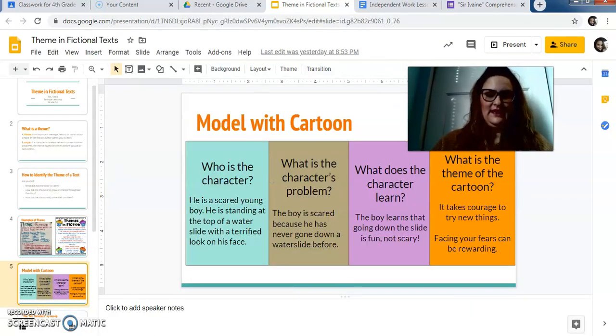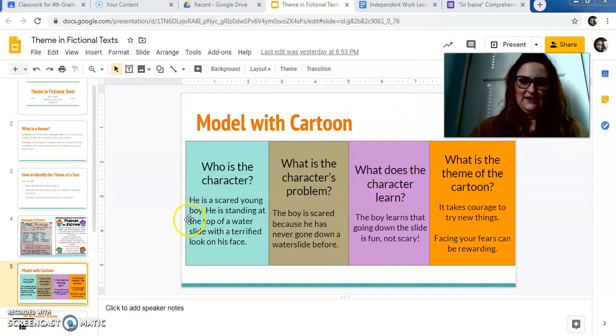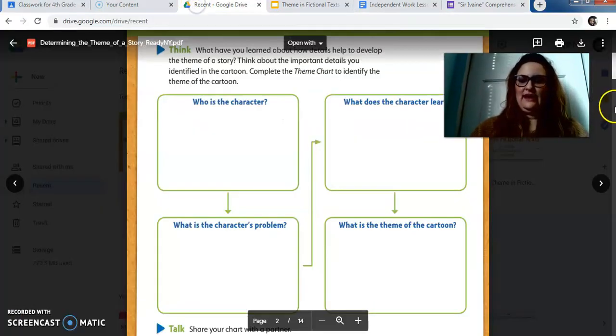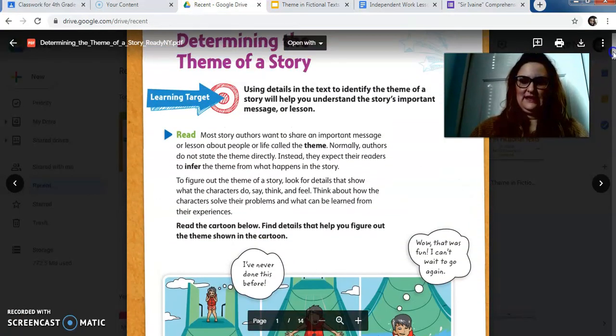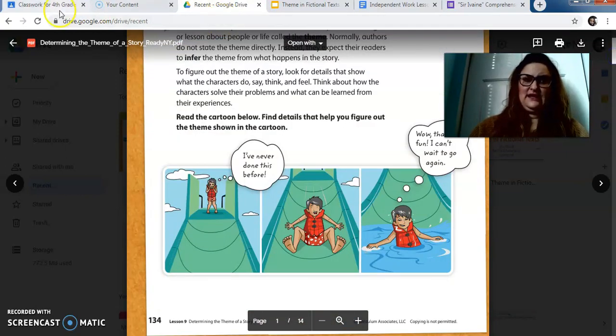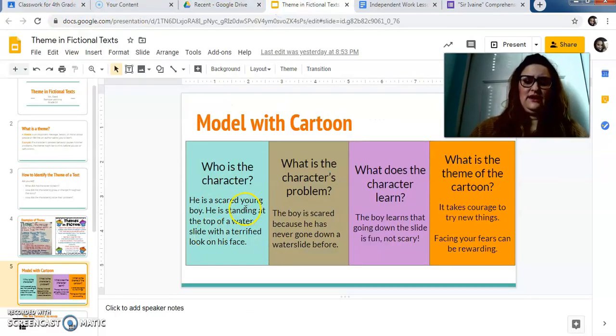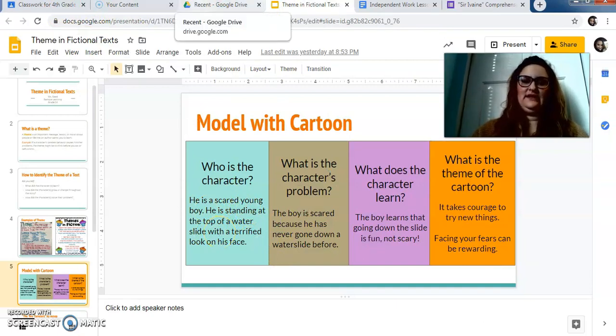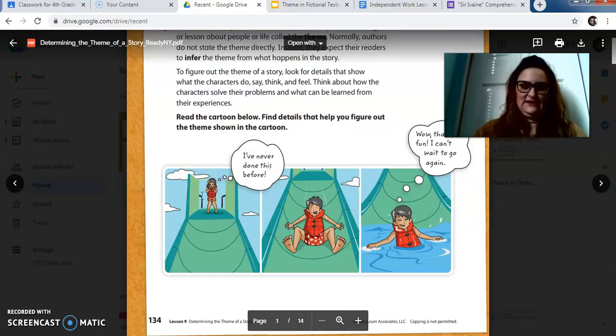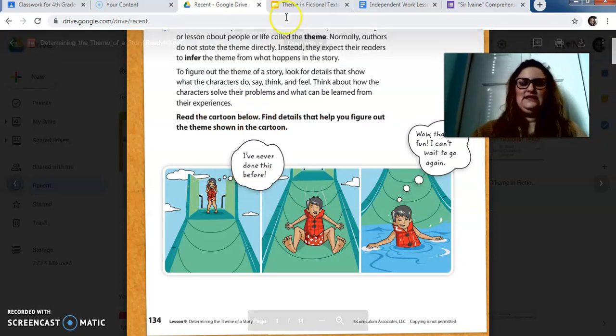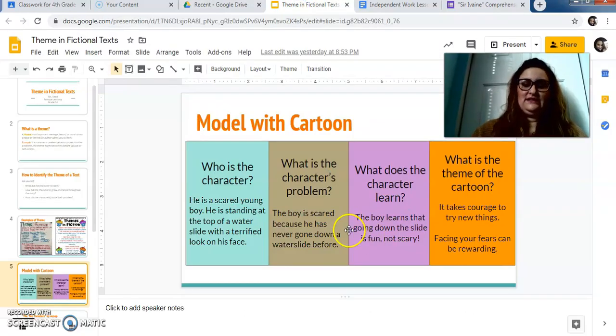So luckily for you, I filled this out. So the character in the cartoon, if you look back at it, obviously, he's a, he looks like a little boy. He's a scared young boy. He's standing at the top of a water slide with a terrified look on his face. Yeah, he looks pretty scared. If you can see him at the top, like his knees, like facing each other, holding his face. Pretty scared. What's the character's problem? The boy's scared because he's never going down a water slide before. You can obviously see that he even says that I've never done this before. So that's his problem. He's scared. He's never going down one before.